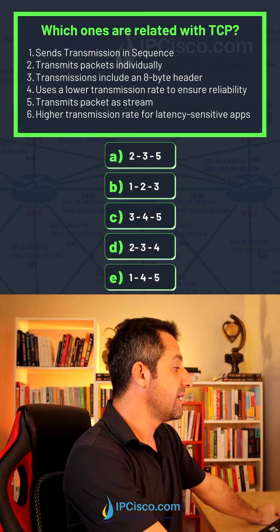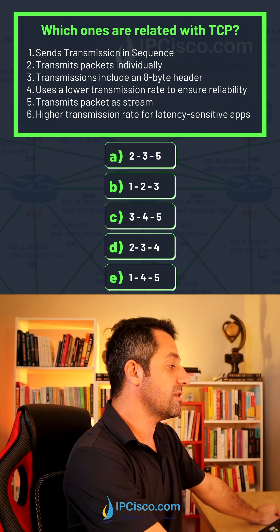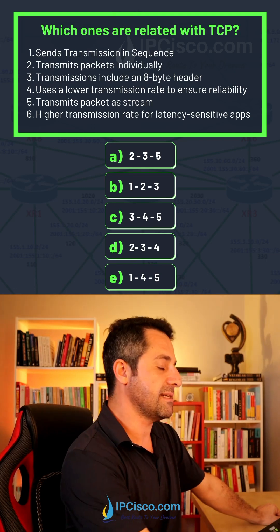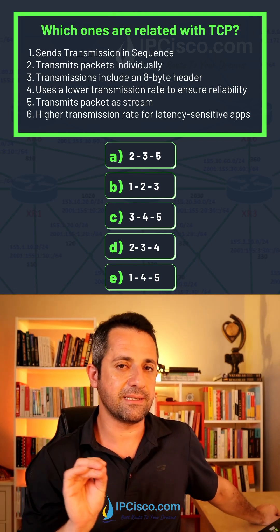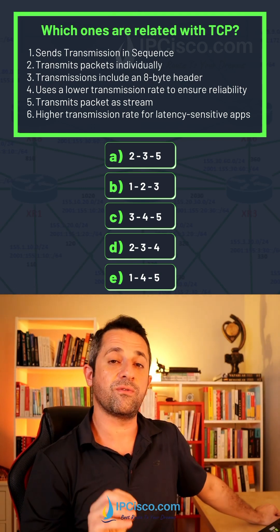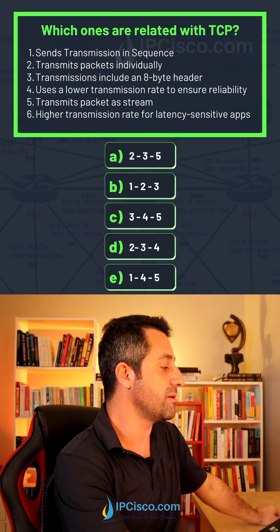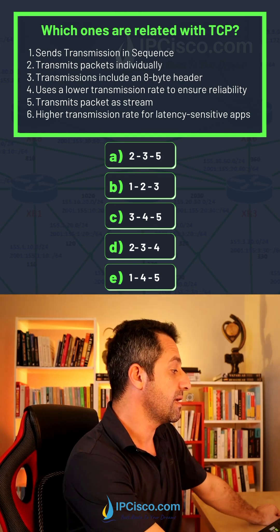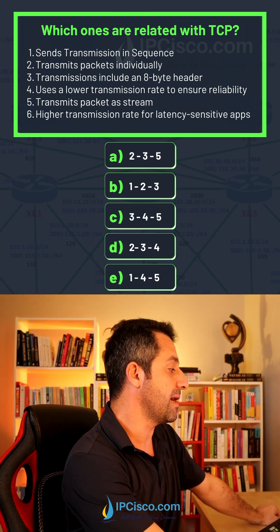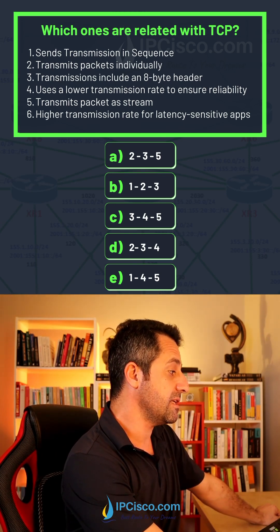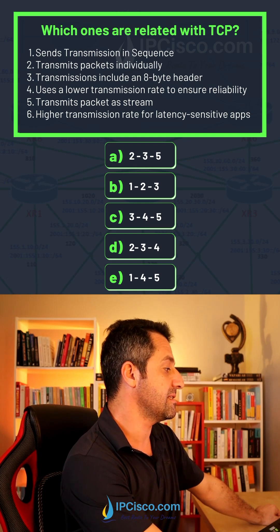Transmission includes an 8-byte header — no, this is not the property of TCP. This is the property of UDP, so the 8-byte header is a UDP property. Uses a lower transmission rate to ensure reliability — yes, this is true for TCP.